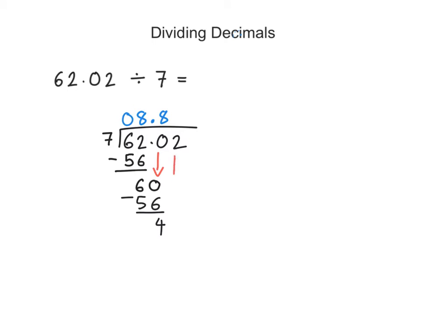And then we bring this 2 down. And then we ask ourselves: how many 7s go into 42? Well clearly in 42 there are exactly 6 lots of 7, because 7 times 6 is 42. 42 taking away 42 is 0, there aren't any remainders, and we stop here. So the answer to this question — 62.02 divided by 7 — is 8.86.